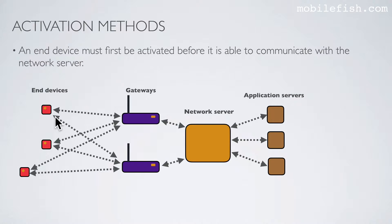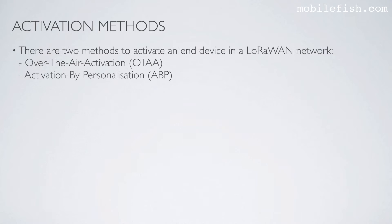An ANT device must first be activated before it is able to communicate with the network server. There are two methods to activate an ANT device in a LoRaWAN network: over-the-air activation, also known as OTA, and activation by personalization, also known as ABP.